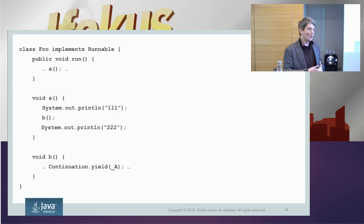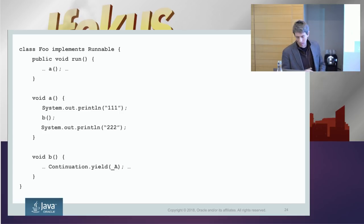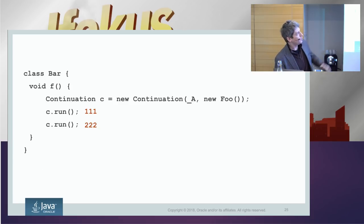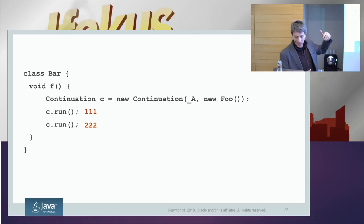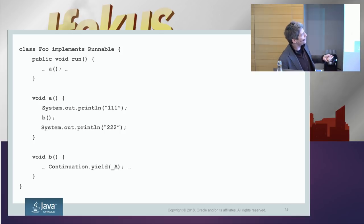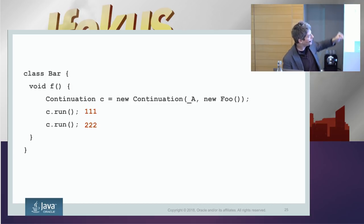You create a new continuation with that scope and give it a runnable. The first time you call run, it's going to call A, A prints 111, then calls B, and B yields the continuation. When you call run again, B returns, then it prints 222. The difference between this and a thread is that everything runs in-line — it doesn't get executed somewhere else, it's not scheduled. When you call run, that runnable gets executed in place, it just doesn't start fresh — it starts from wherever it left off.